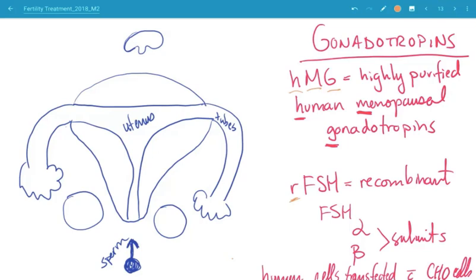Examples of gonadotropins include human menopausal gonadotropin, which is highly purified human menopausal gonadotropins or HMG. The other source is recombinant FSH, basically working off the alpha and beta subunits of the FSH molecule and taking human cells and transfecting them with Chinese hamster ovary cells to essentially generate this molecule synthetically. Those are the two common formulations that are available.